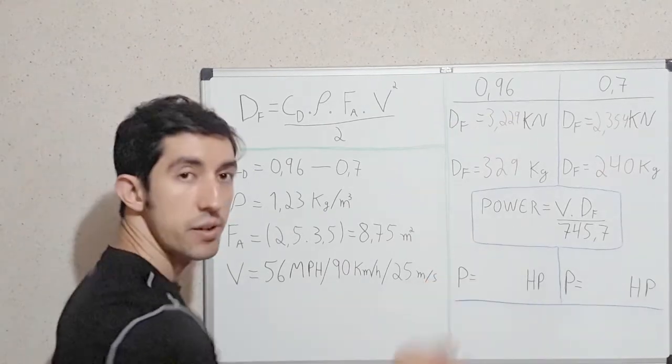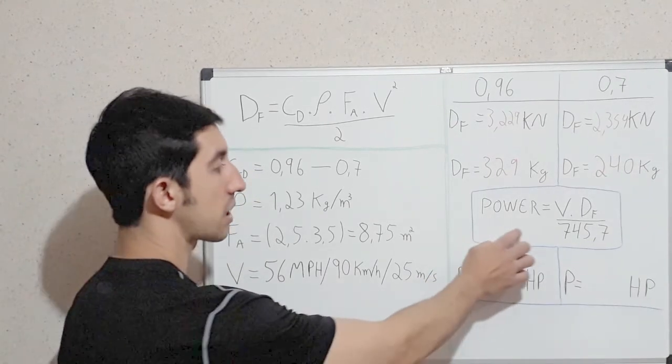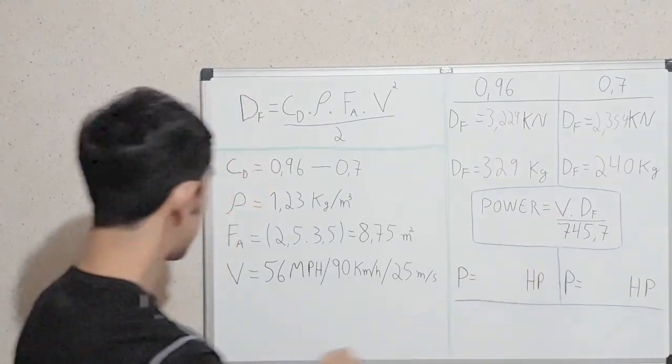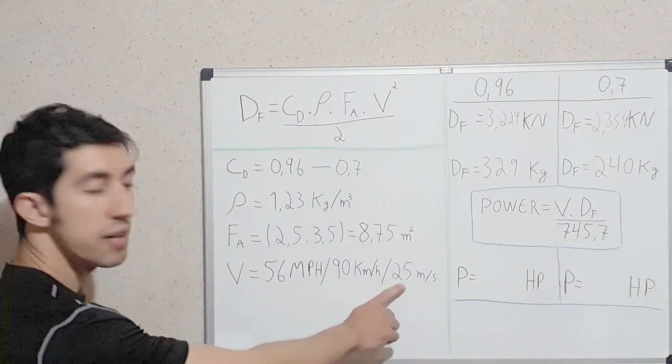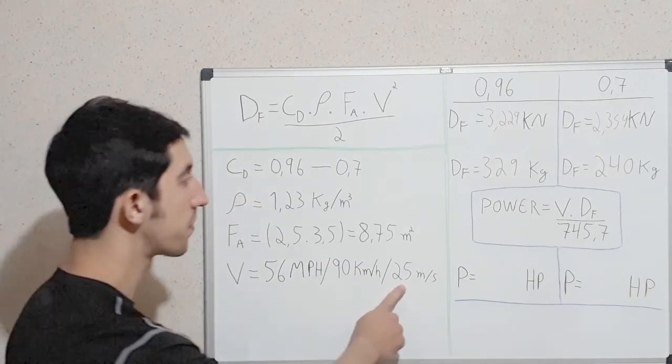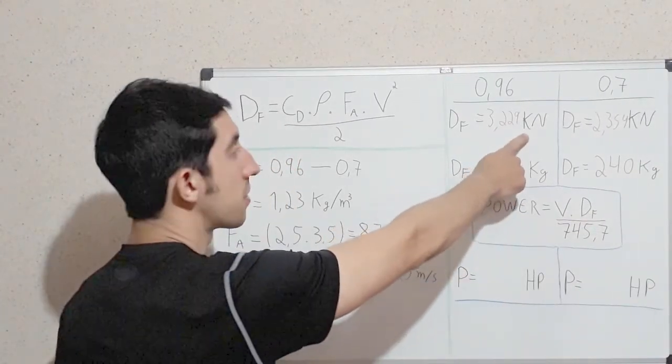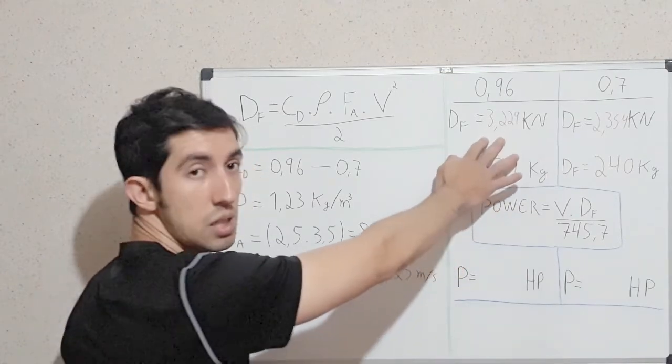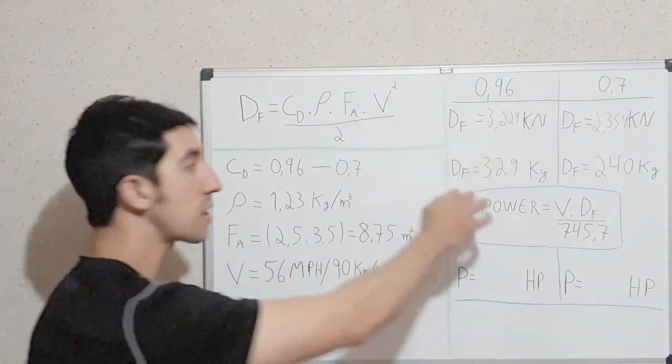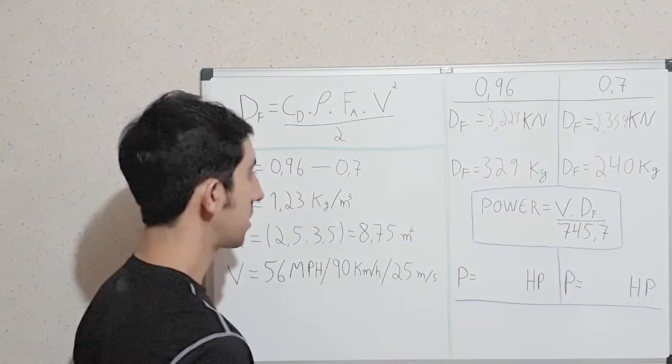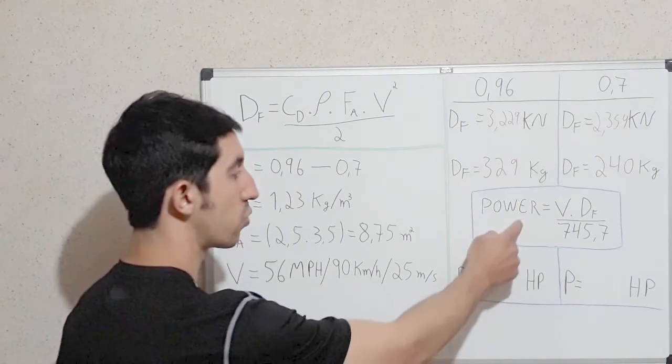To see the horsepower, we use this formula here. Power equals to velocity, that is, 25 meters per second, times the drag force, needs to be in newton, here. First, we're going to be using without fairing, then with fairing. The output of this formula will be in watts.